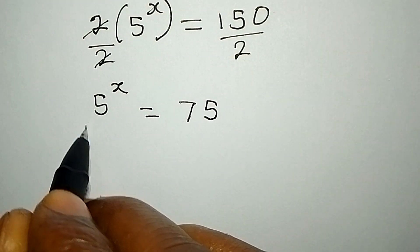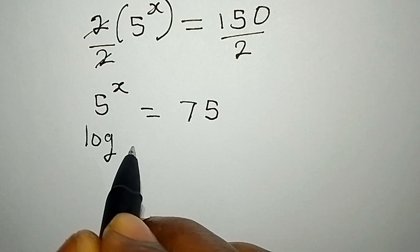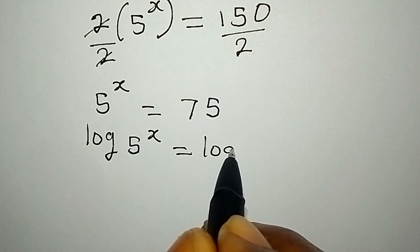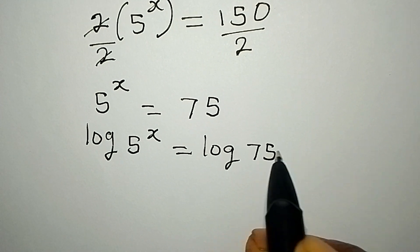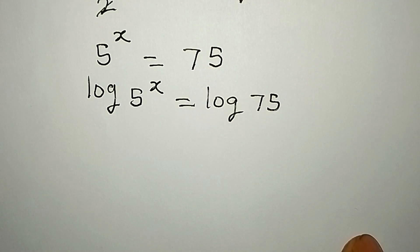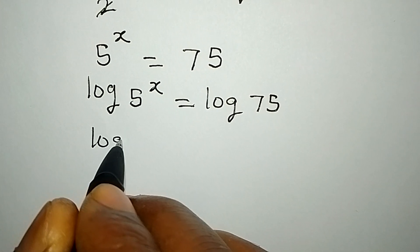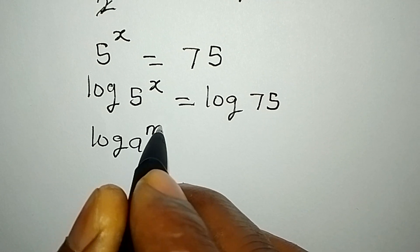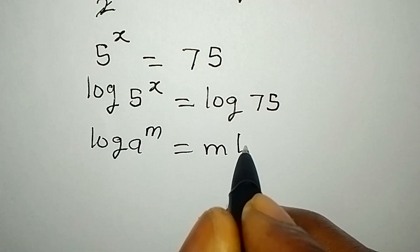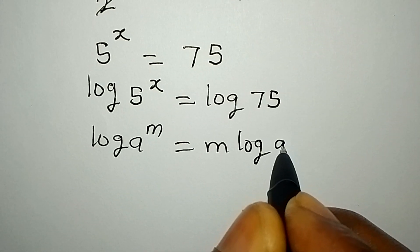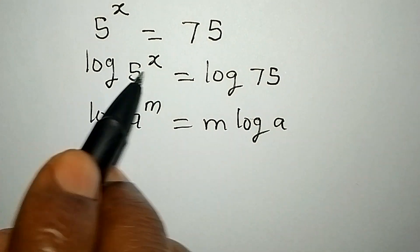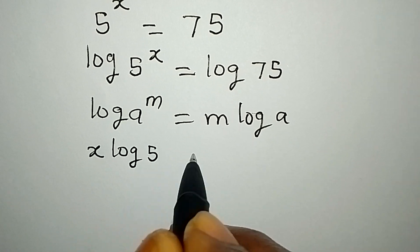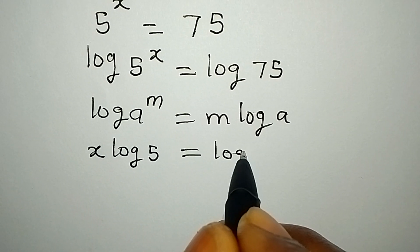To proceed, we are going to take the log of both sides. So log of 5 to the power x equals log 75. Remember the law that log a to the power m equals m log a. Applying that same law, x comes out in front, and we have x log 5 equals log 75.